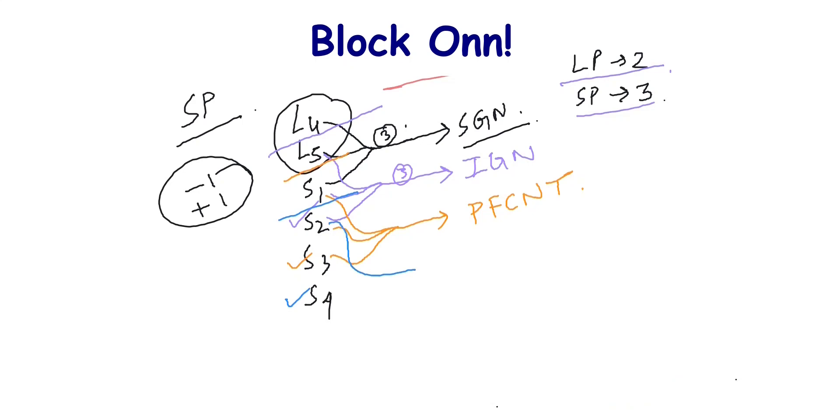So S2, S3, S4 form the pudendal nerve. That's all for sacral plexus.